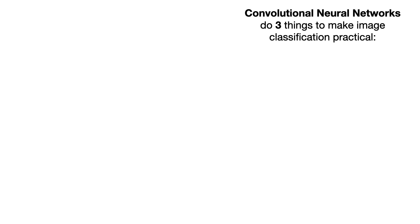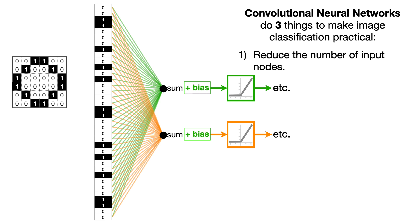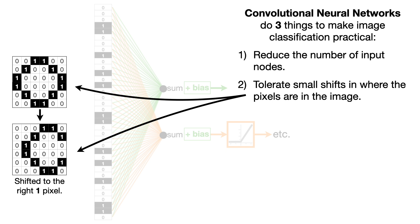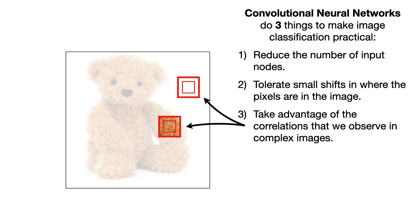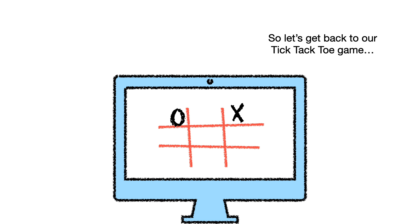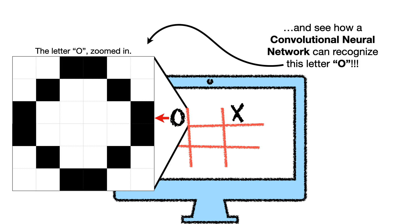Convolutional neural networks do three things to make image classification practical. One, they reduce the number of input nodes. Two, they tolerate small shifts in where the pixels are in the image. And three, they take advantage of the correlations that we observe in complex images. So let's go back to our tic-tac-toe game and see how a convolutional neural network can recognize this letter O.